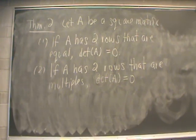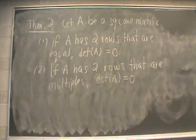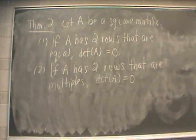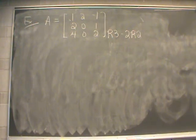One nice thing about the elementary row operation procedure is that it gives us theorem number 2, which is a quick way of checking whether the determinant of a matrix is equal to 0. Theorem 2 says: if a square matrix has two rows that are equal, the determinant must be 0. Also, if A has two rows that are multiples of each other, this also indicates the determinant of A will equal 0. Looking at this matrix A, row 3 looks a lot like row 2.